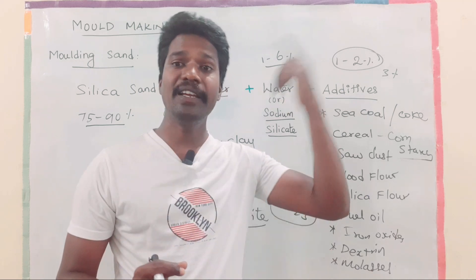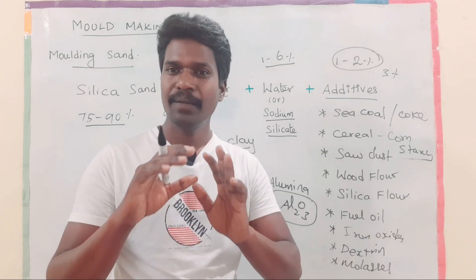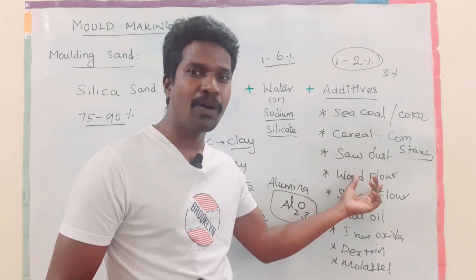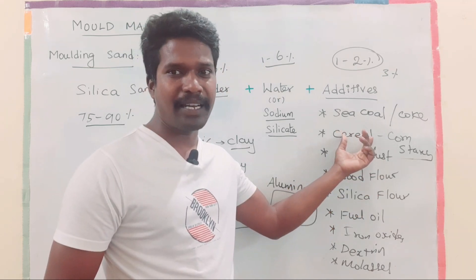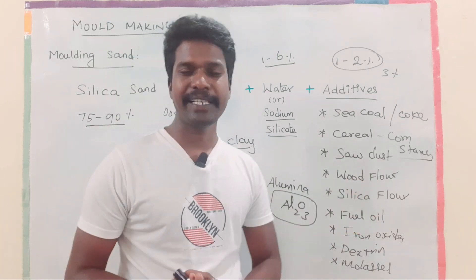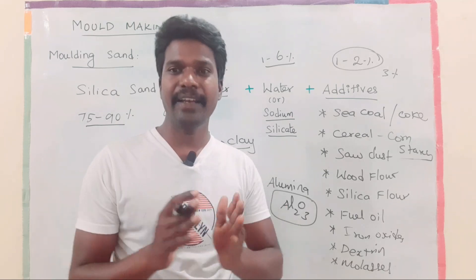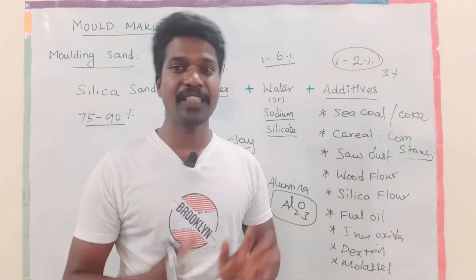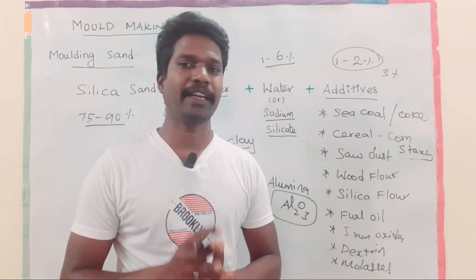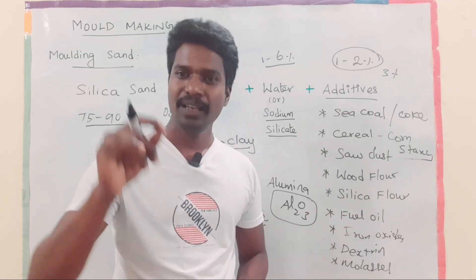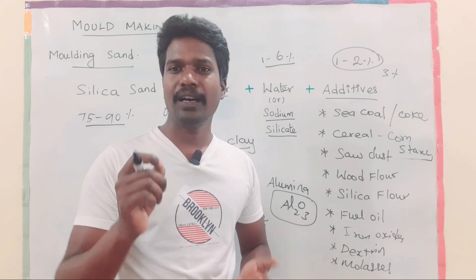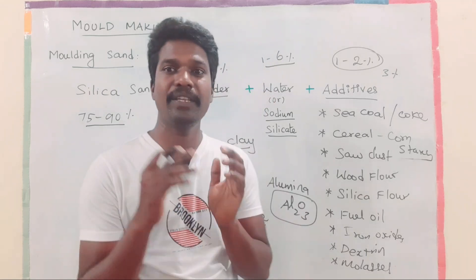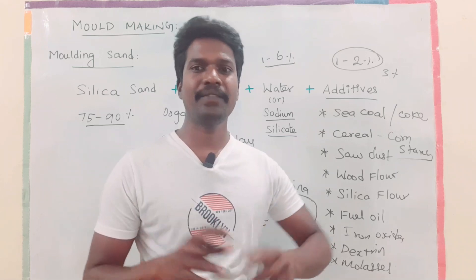Sawdust improves porosity, allowing gases to escape from the mold. Wood flour also improves collapsibility. Silica flour is used as a facing sand to improve higher temperature strength and produce a smooth casting surface. Fuel oil increases moldability and plasticity.